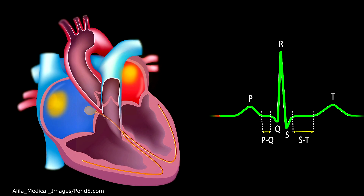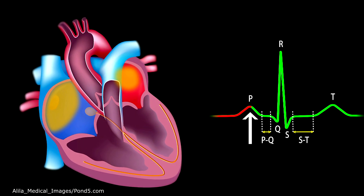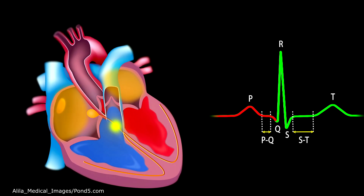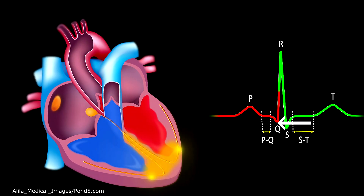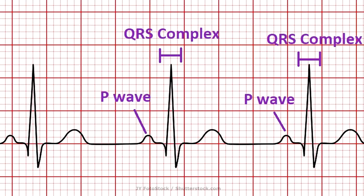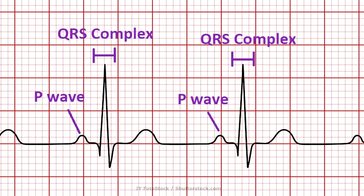Normally, whenever the atria contract, it creates the P wave, and then right after that we have ventricular contraction, which creates the QRS complex. So on an EKG strip, you should have P wave, QRS complex, P wave, QRS complex — and that shows you that the signal is traveling from the atria to the ventricles causing contraction, and it's all working well together.